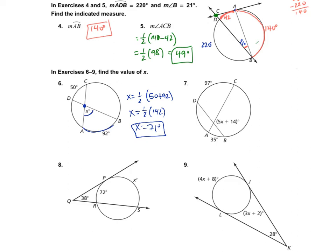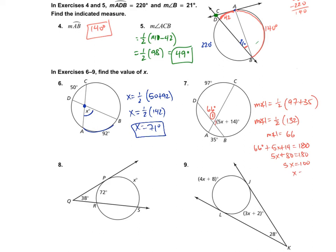For number 7, this angle in here is 5X plus 14. I'll call the supplementary angle 'angle 1.' Angle 1 equals one-half of 97 plus 35, which is one-half of 132, so angle 1 is 66 degrees. Then 66 plus (5X + 14) equals 180. Simplifying: 5X plus 80 equals 180, so 5X equals 100, and X equals 20.